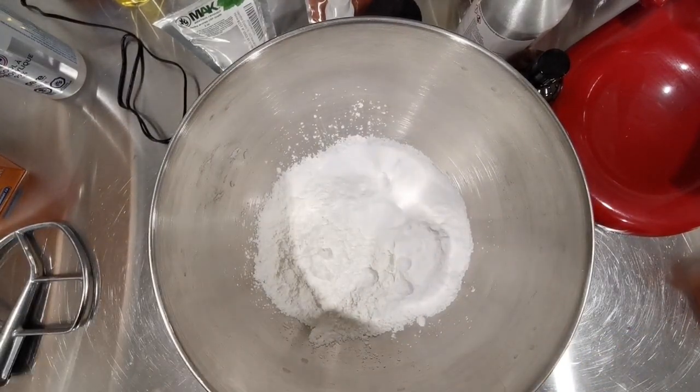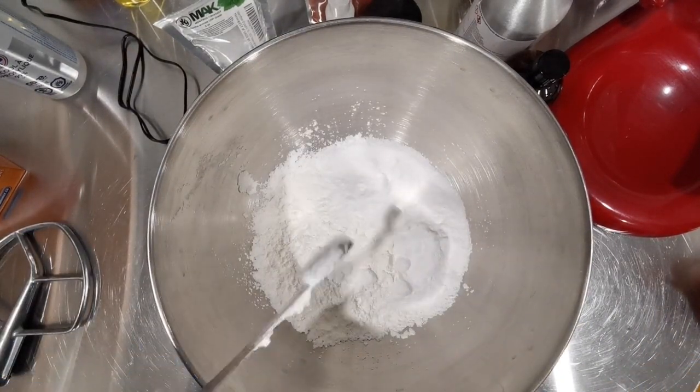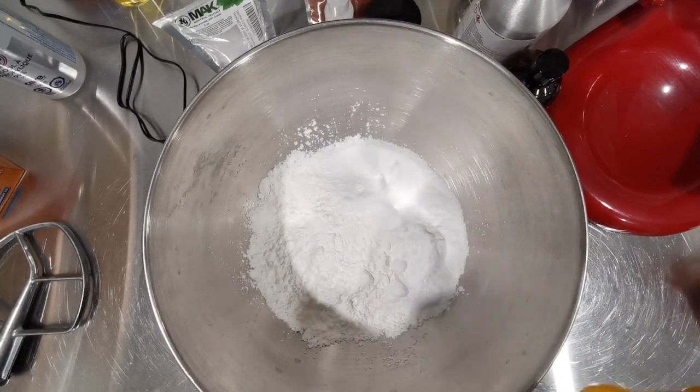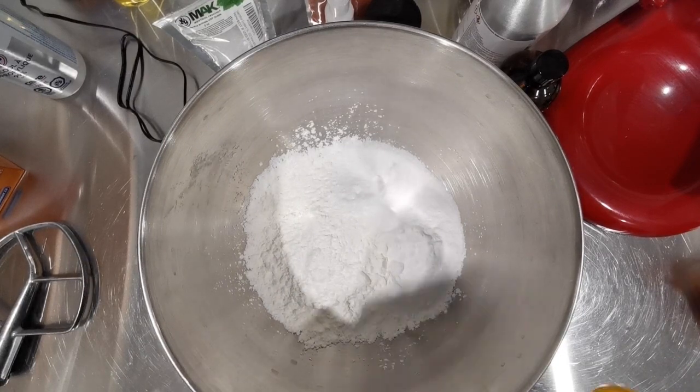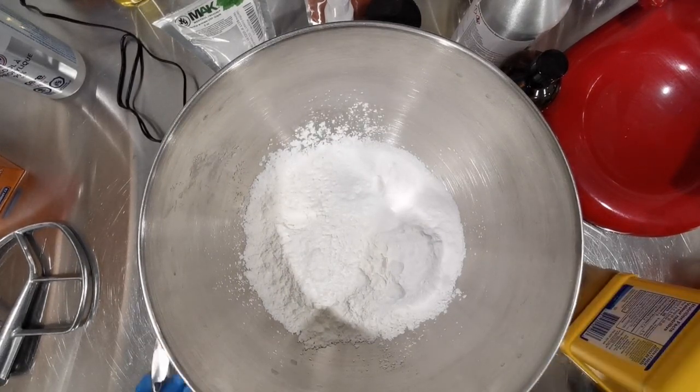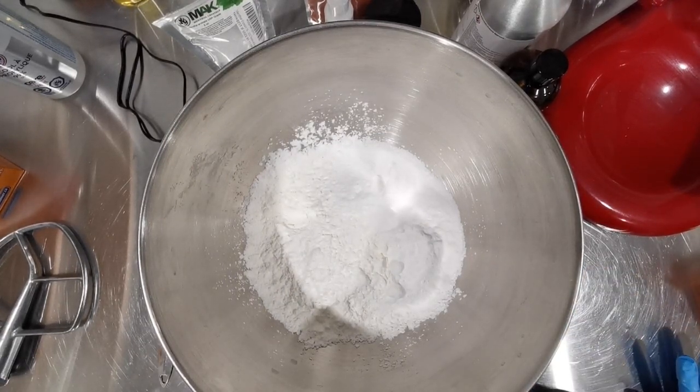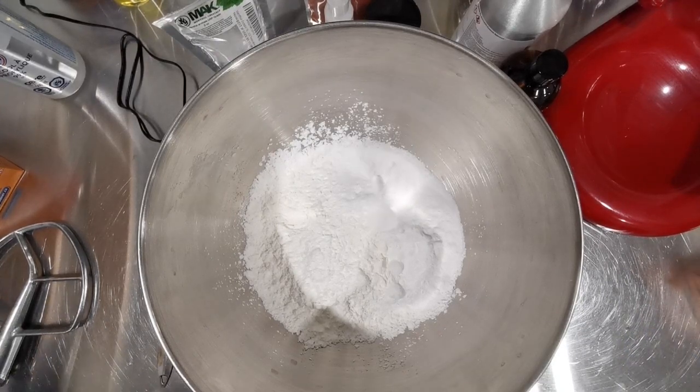Now in the extra strength recipe, it's just slightly tweaked. It is 56% baking soda, 27.5% citric acid, 1% polysorbate 80, 7% cornstarch.